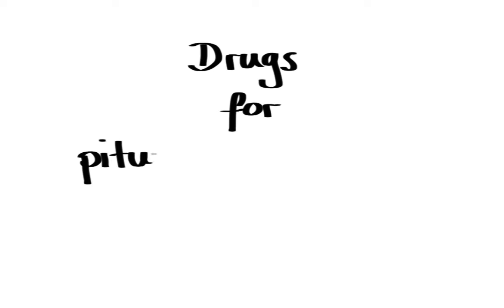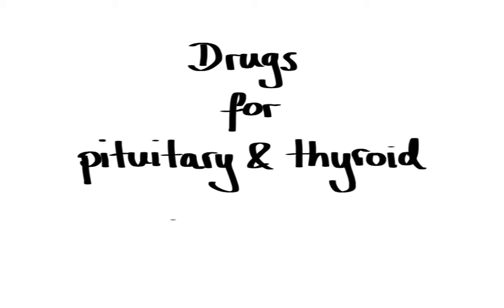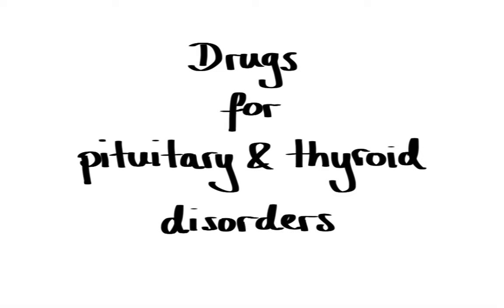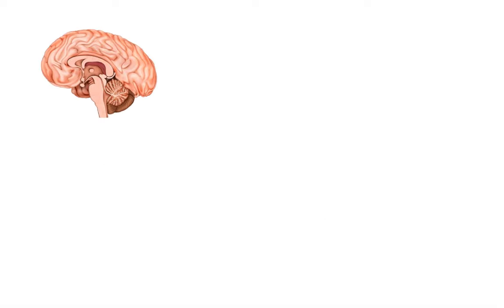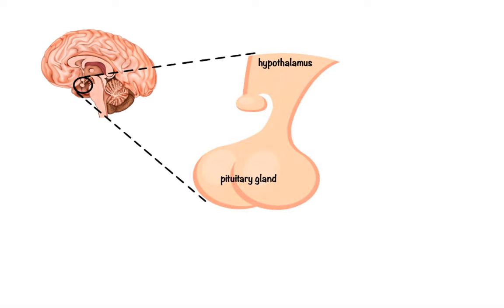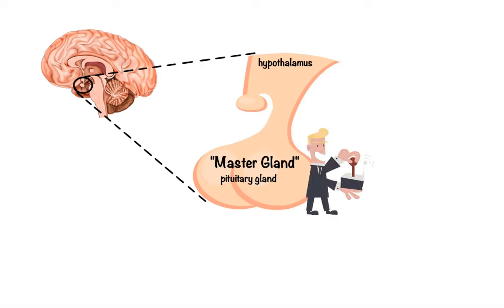In this lecture, we are going to cover the pharmacology of drugs used in treatment of pituitary and thyroid disorders. Joined at the base of the brain, the hypothalamus and pituitary gland are the key players in the endocrine system. The pituitary, which is controlled by the hypothalamus, is often called the master gland due to its function to control the secretion or inhibition of hormones.